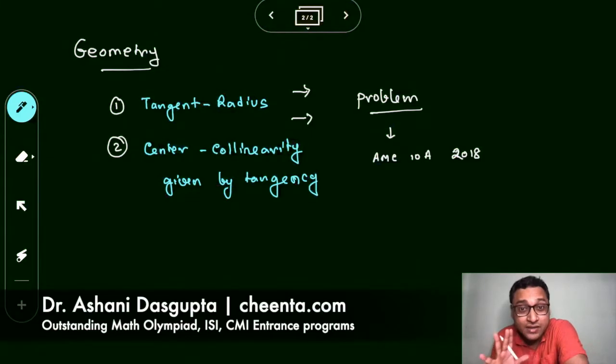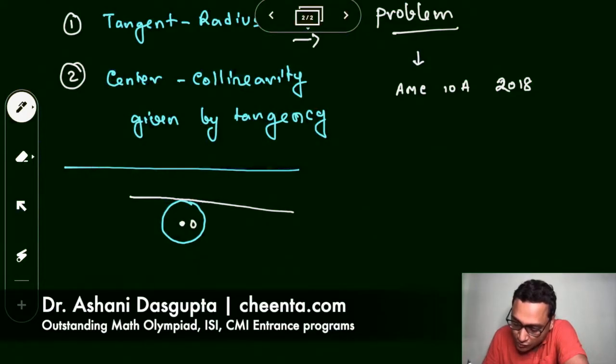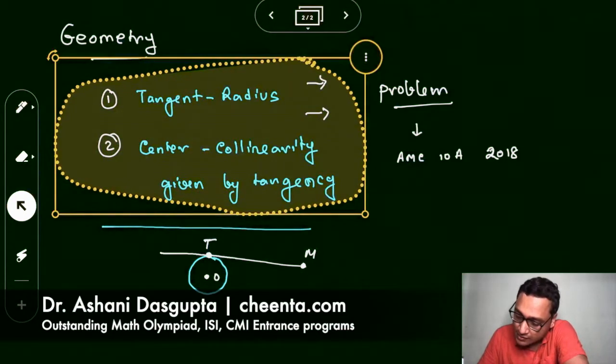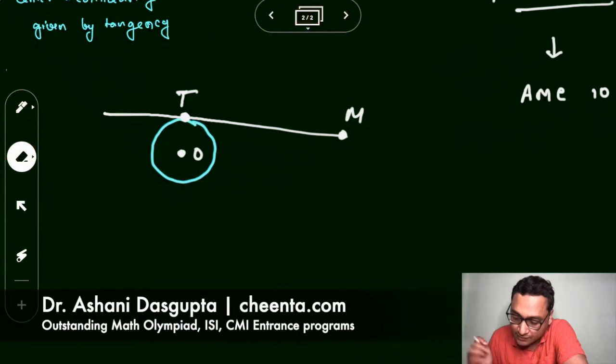The first thing, the tangent radius relation, is the following: if you have a circle and if you have a tangent to the circle, then let us draw the center. Let us call it O and suppose the point of tangency is T, and the tangent itself is TM. So I just made a point on the tangent and I call it M. Now if you don't know what a tangent is, it's a line that touches the circle at exactly one point.